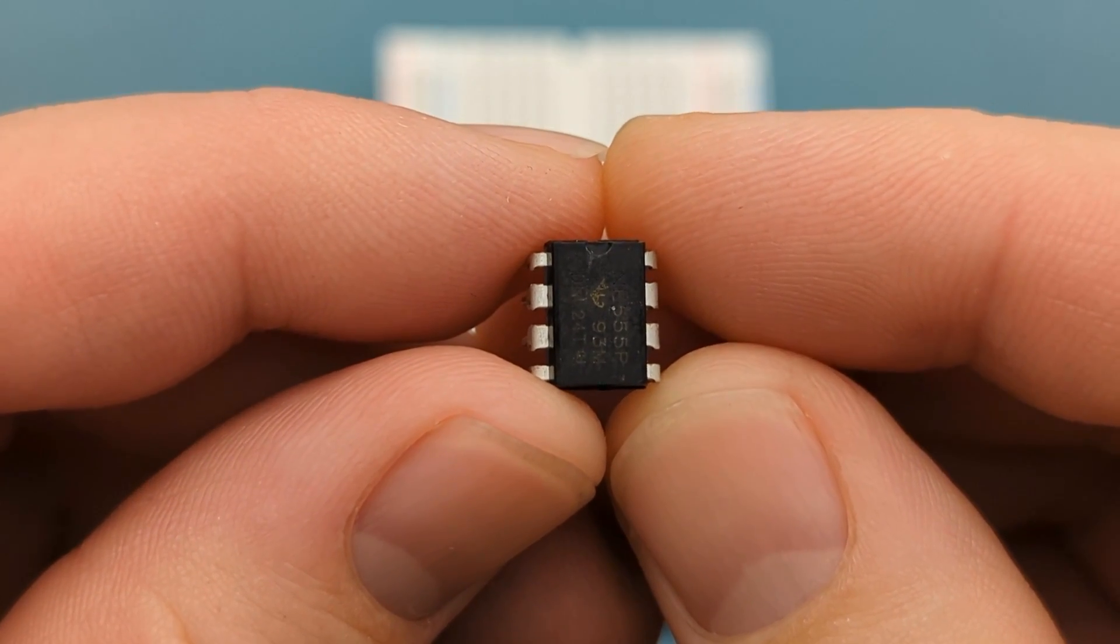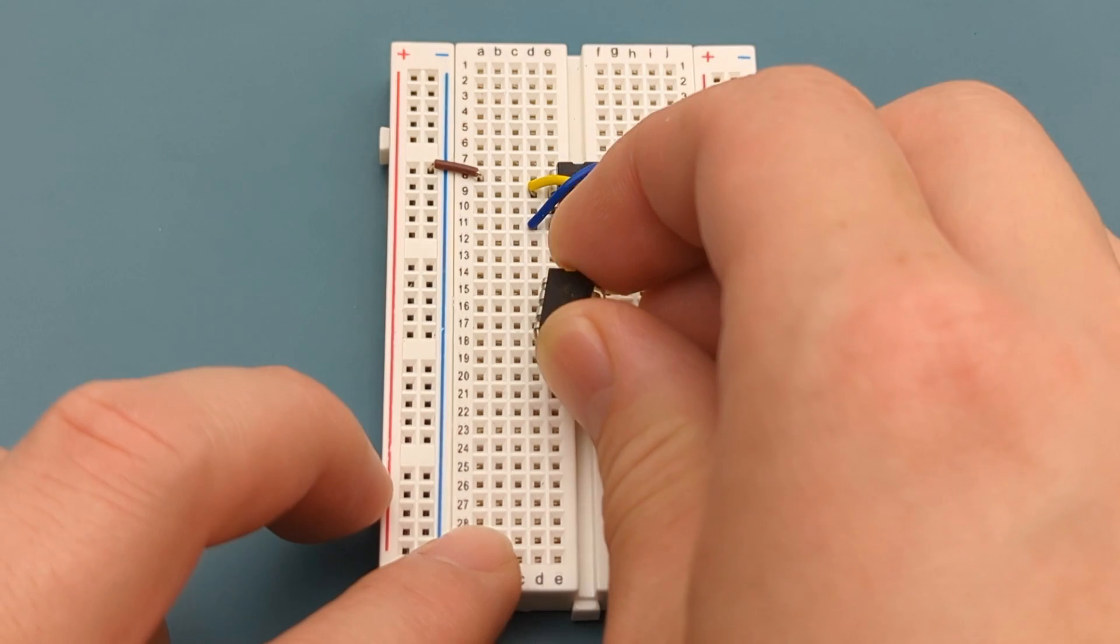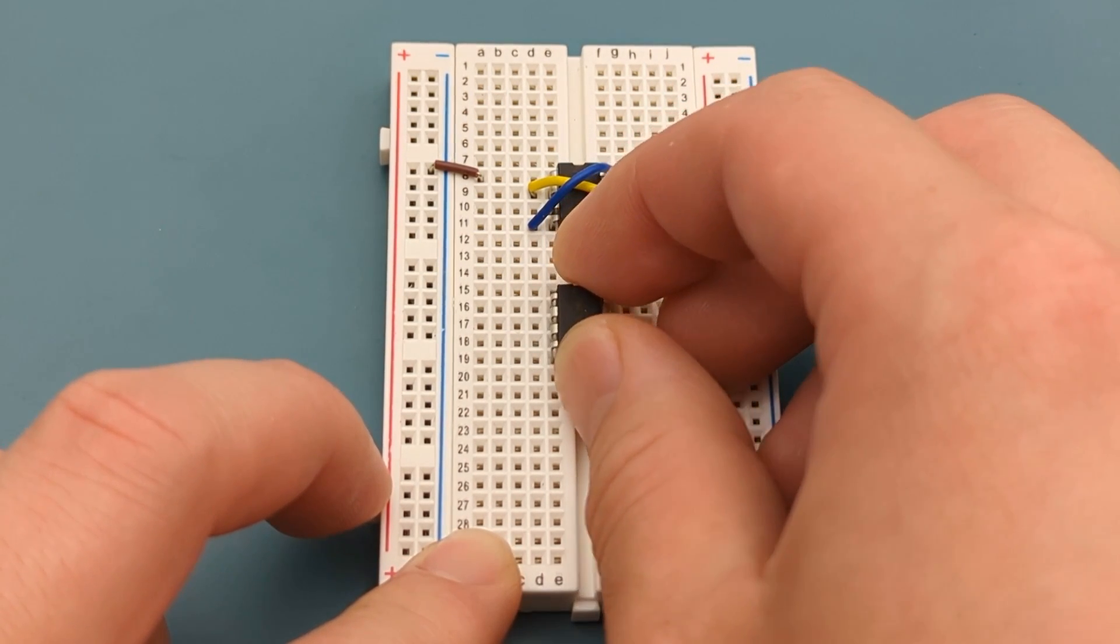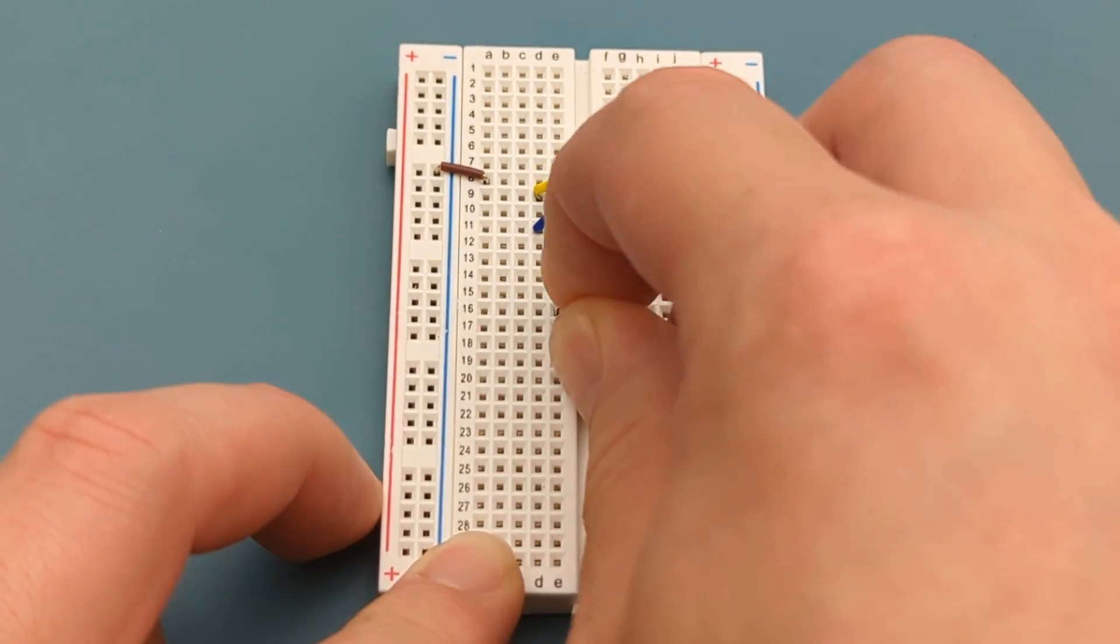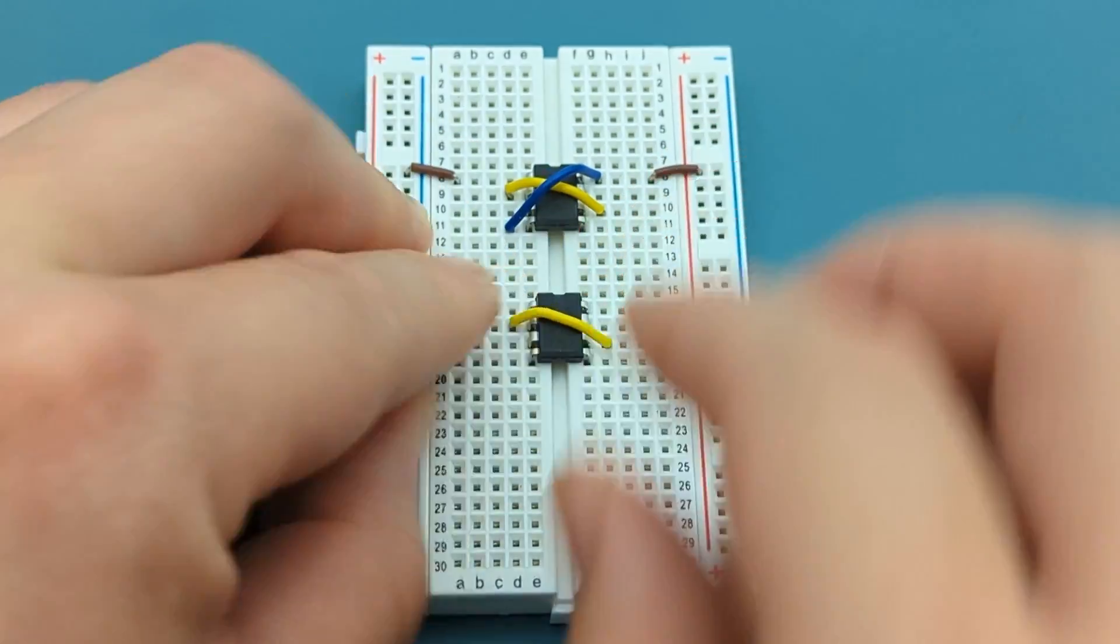Now, take the second 555 timer and place it in the center of the breadboard, just below the first one. Repeat the same jumper wire setup on the second 555 timer.